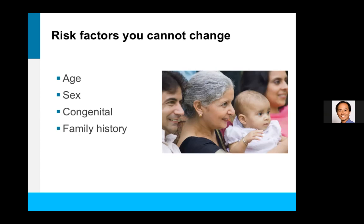There are some risk factors that we don't have control over — that we cannot change. Those would be our age — we're all getting older — sex, congenital things that we are born with, and our family history. If anyone in our family has had a heart attack or heart disease, these are risk factors for heart disease, but we can't do anything about these, we can't change them.